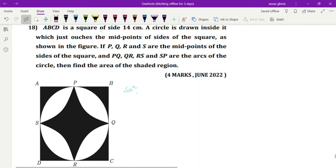Okay, now it is good. Fine, let's start. See, ABCD is a square of side 14 centimeter. You can see ABCD is a square. A circle is drawn inside which just touches the midpoint of the sides of the square, as shown in the figure. P, Q, R, S are midpoints. Okay, fine. Find the area of shaded region.